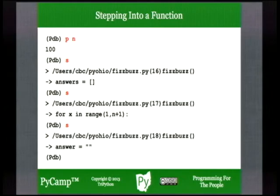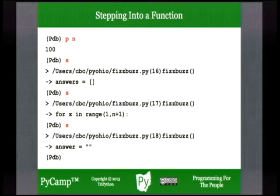I can say 'p n' — evaluate the parameter 'n' and show me the value bound to it. The fizzbuzz function is being called with the argument 100 bound to the parameter 'n'. So let's single-step through that function. Hit 's' once to proceed to the first statement past the function definition header, where we bind an empty list to 'answers'. Press 's' again to go to the for loop header. Press 's' again to proceed inside the for loop.